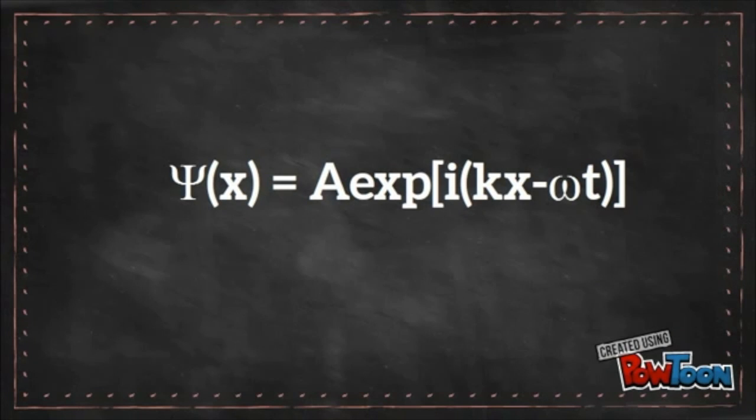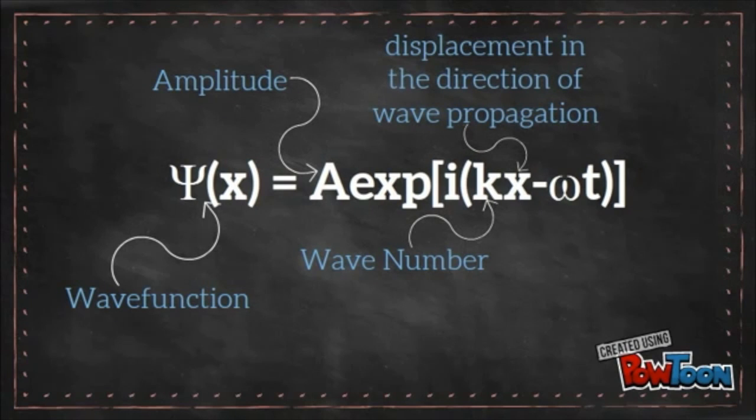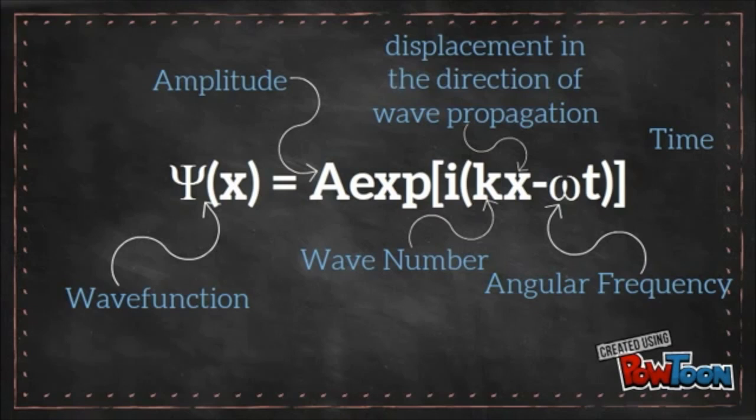Where psi x is the wave function, a property that relates to the probability of where a particle, such as a photon, is found. A is the amplitude of the wave, k the wave number, being defined as equal to 2pi divided by the wavelength lambda. Little x is the displacement in the direction of the wave propagation. Omega is the angular frequency and t is the time elapsed.